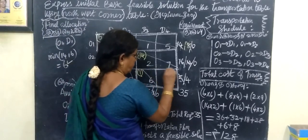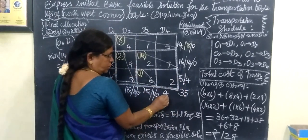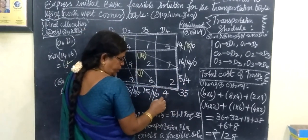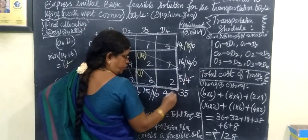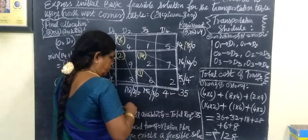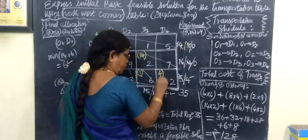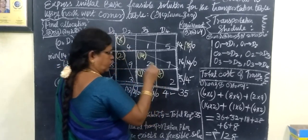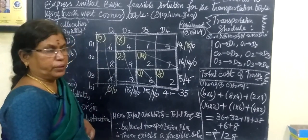This is the final allocation. The remaining values are both 4. The minimum of 4 and 4 is 4. So write 4 here. The problem is now over.